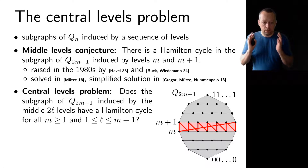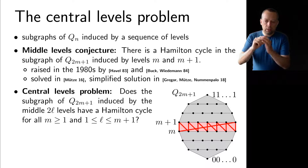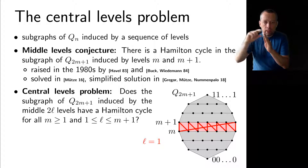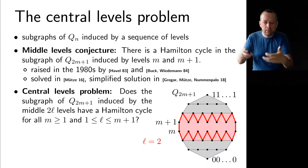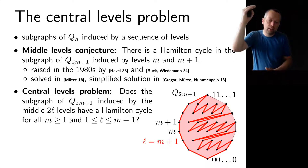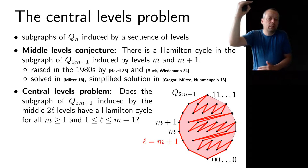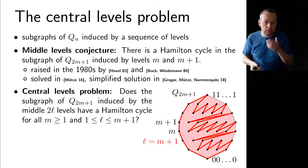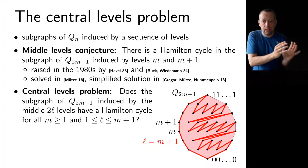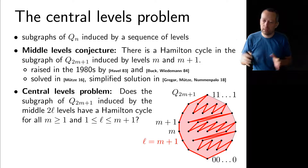We now look at the central levels problem, which naturally generalizes the middle levels conjecture. Instead of just looking at the middle two levels, we look at any even number of levels around the middle — the middle two, four, six levels, and so on, controlled by a parameter l. For l equals 1 you look at the middle two levels; for l equals 2, the middle four levels. At the extreme, when l equals m+1, you look at the entire cube. This central levels problem is a nice interpolation between the middle levels problem and the binary reflected grey code, covering all intermediate cases.